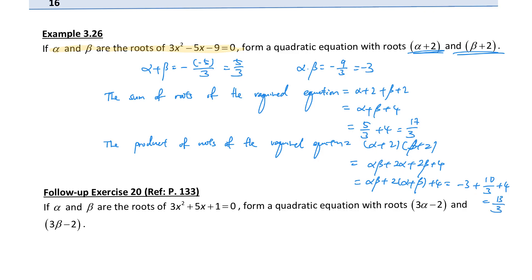Now I have the sum of roots and product of roots, so the required equation is: x squared minus (sum of roots) times x plus (product of roots) equals 0.